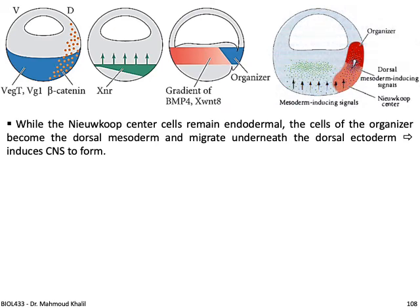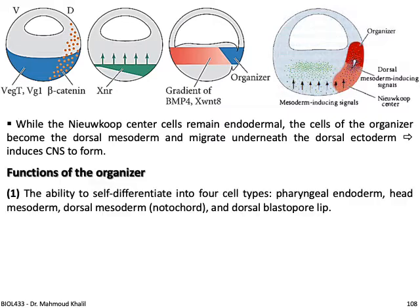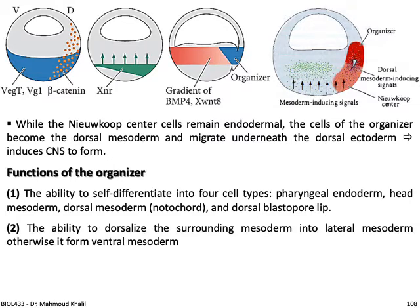Here again, all of these figures have already been discussed. The organizer's function is the ability to self-differentiate into four cell types: pharyngeal endoderm, head mesoderm, dorsal mesoderm (which is the notochord), and the dorsal blastoporal lip.